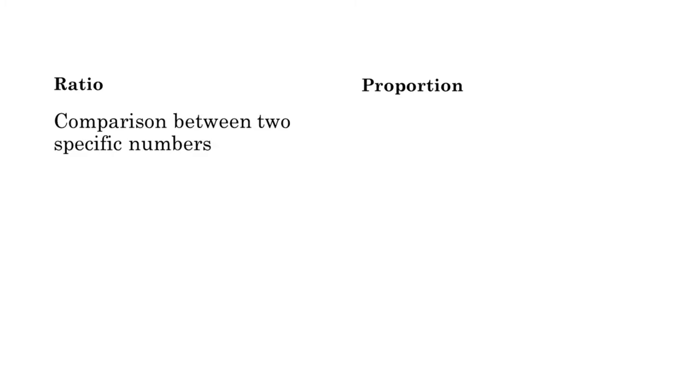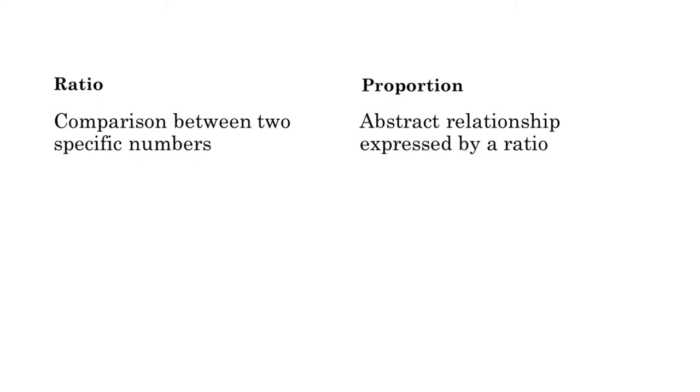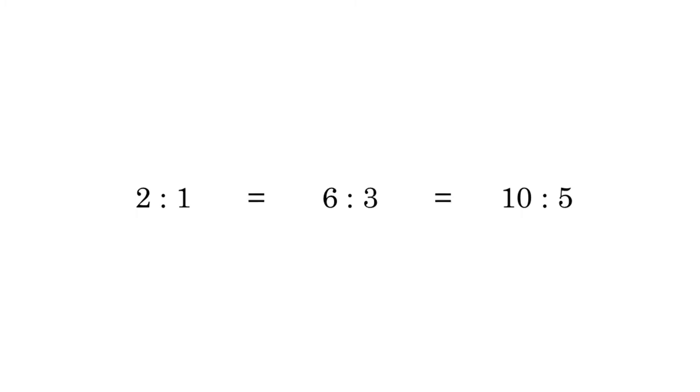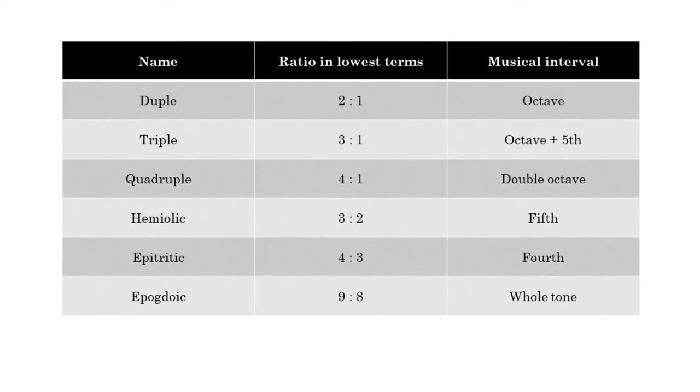Before we go on to categorizing ratios, let's talk about some terminology. I want to make a rough distinction between ratio and proportion. A ratio is a comparison between two specific numbers. A proportion is an abstract relationship that can be expressed by many ratios. So 2 to 1, 6 to 3, and 10 to 5 are all different ratios, but they express the same proportion. The 2 to 1 ratio is the best representative of this proportion since it is in its lowest terms — no smaller pair of numbers expresses the same proportion.